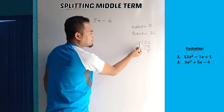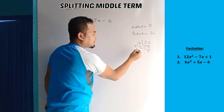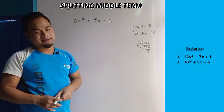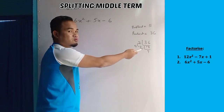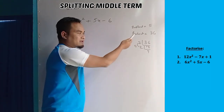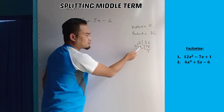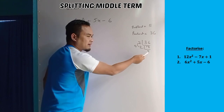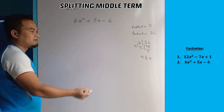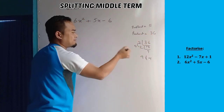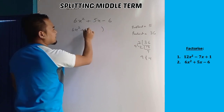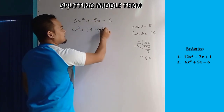We need two numbers whose product is 36 and whose sum or difference is 5. The pairs are: 2 and 18 (difference 16), 4 and 9 (difference 5). So 9 minus 4 equals 5. We split the middle term using 9 and negative 4: 6x squared plus 9x minus 4x minus 6.